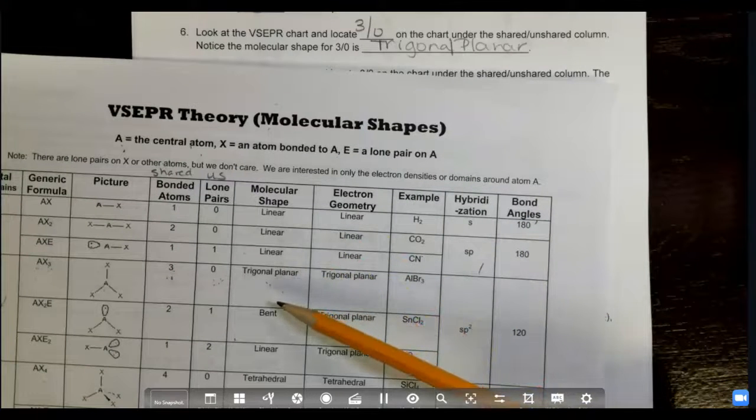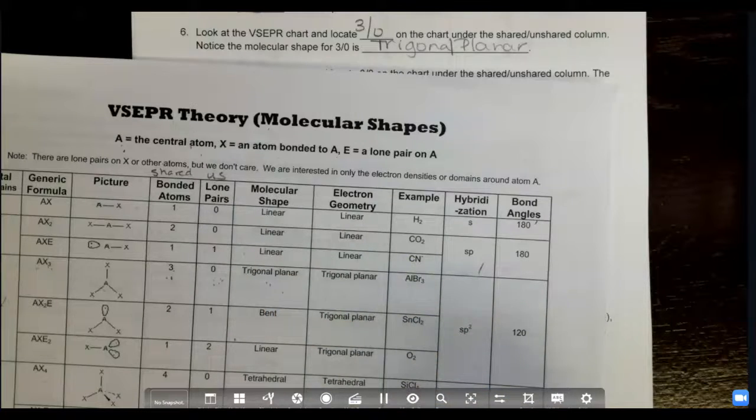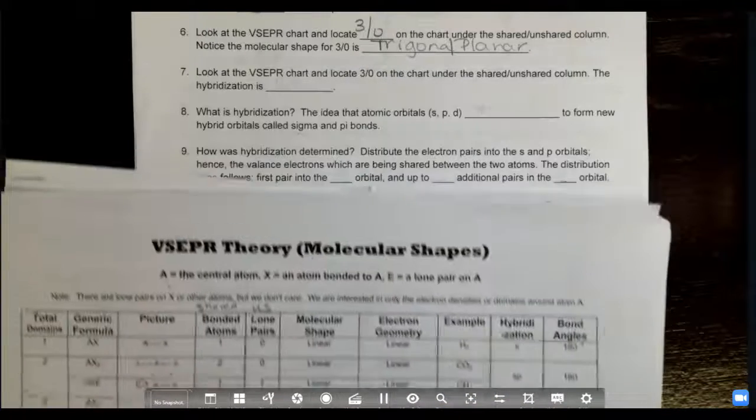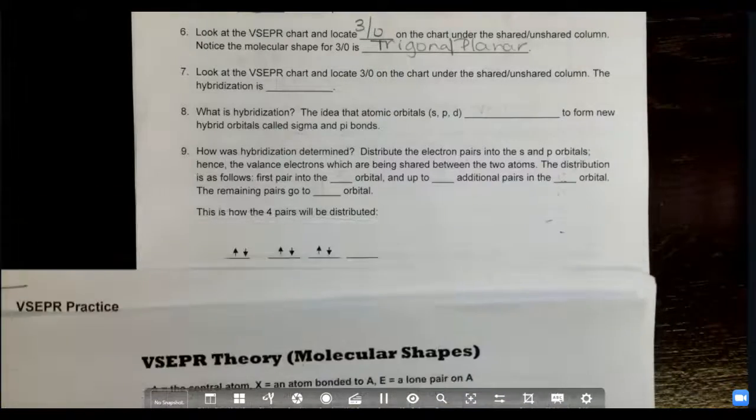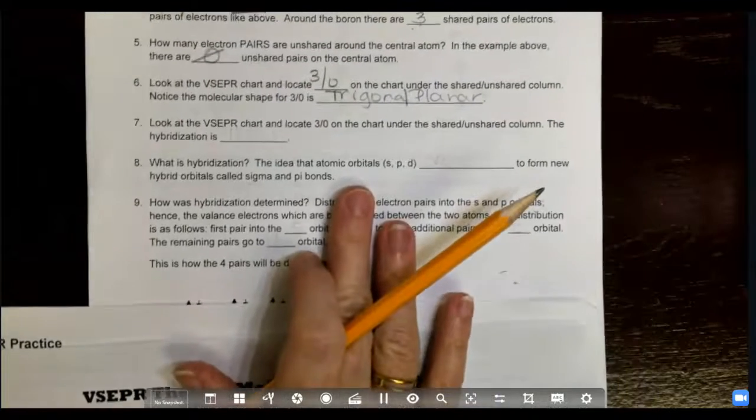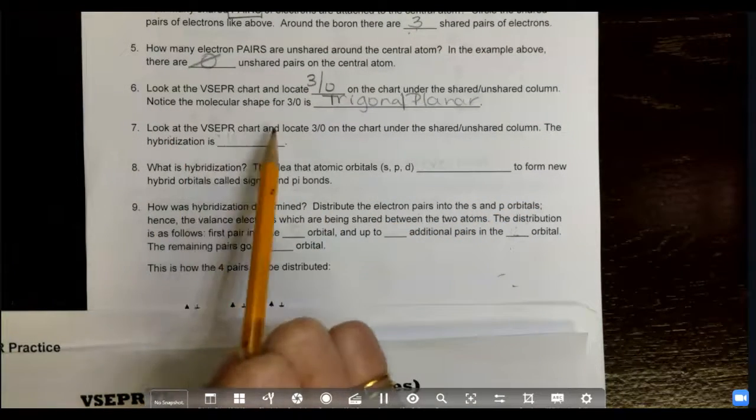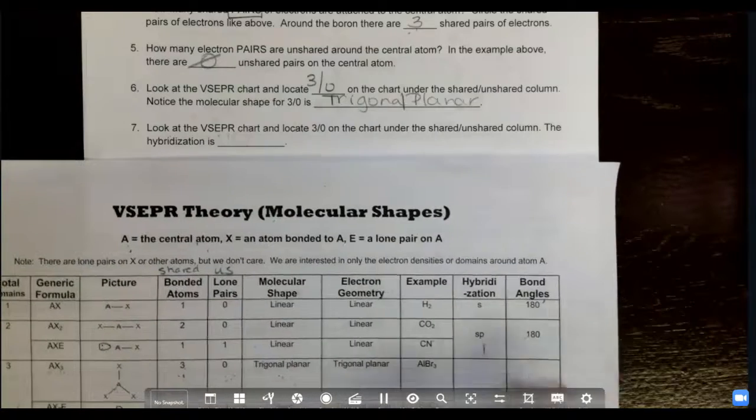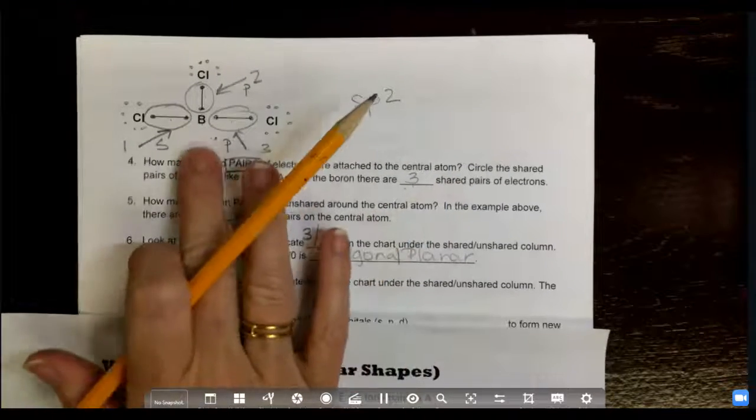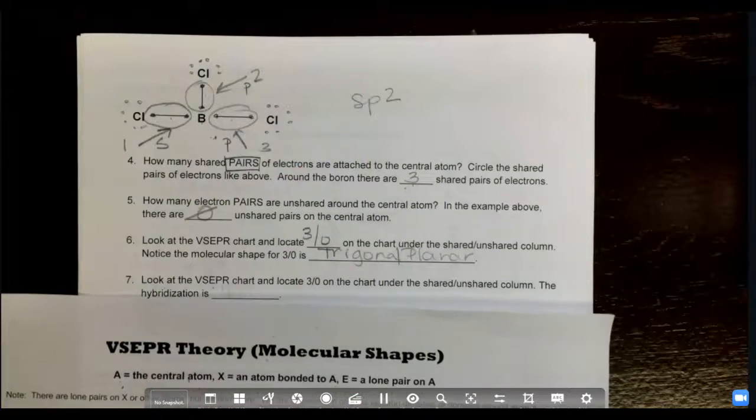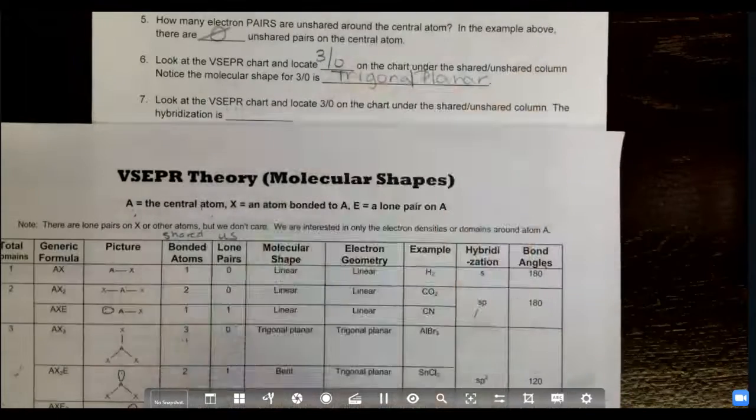going to depend on again the shared versus unshared pairs. So let's look at our notes here, where this is number seven. Right here, if we're going to look at our VSEPR chart here and locate three zero—and again we're talking about this guy right here—we determined he was trigonal planar, three zero.